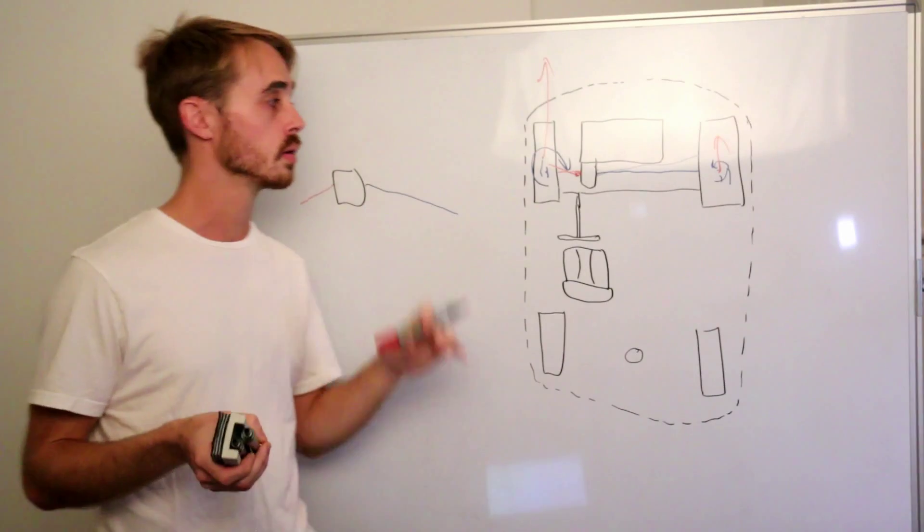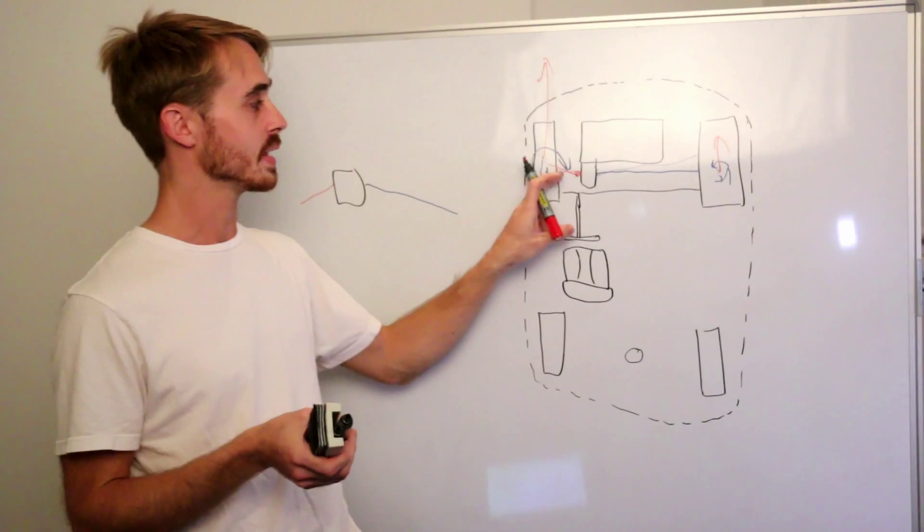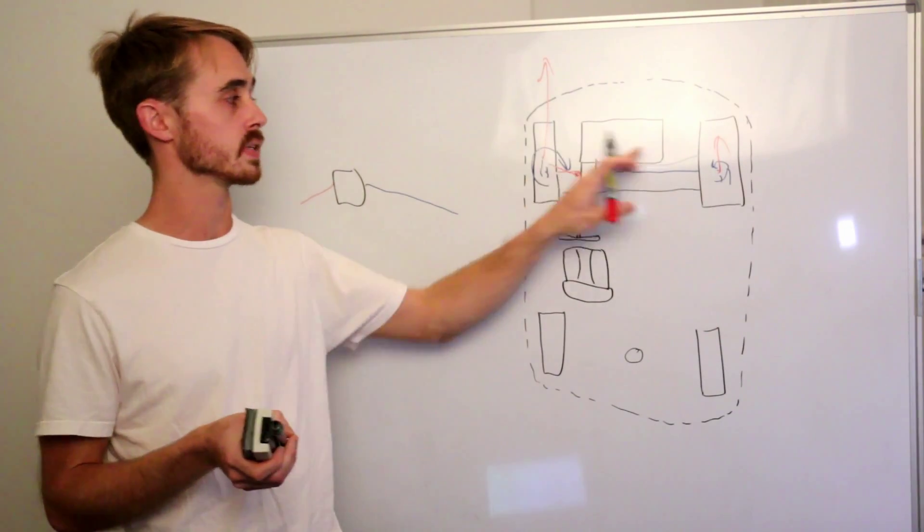So how do we cancel out torque steer? Well to start with that transient torque steer I was talking about at the start of the video the easiest way to do that is to match the stiffness from left to right.